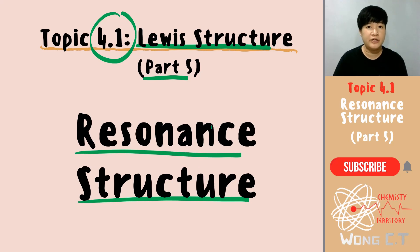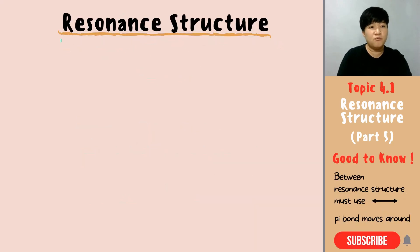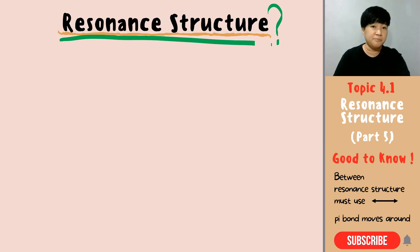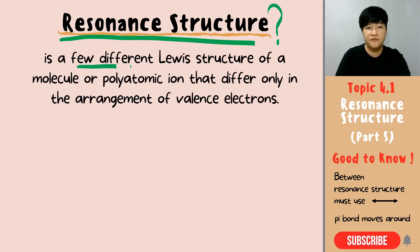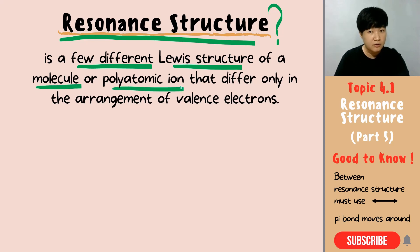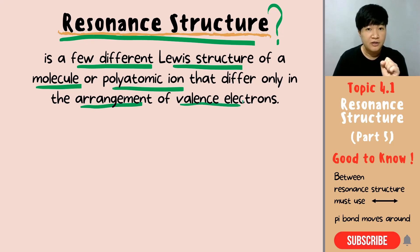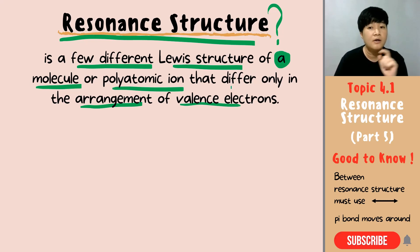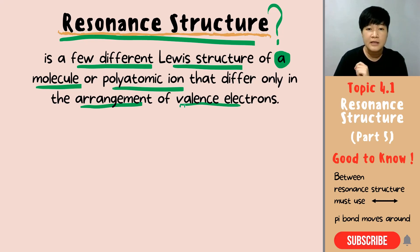Before you watch this video, make sure you're already very good in drawing your Lewis structure. So what is actually resonance structure? Resonance structure is a few different Lewis structures of the same molecule or polyatomic ion that differ only in the arrangement of valence electrons.